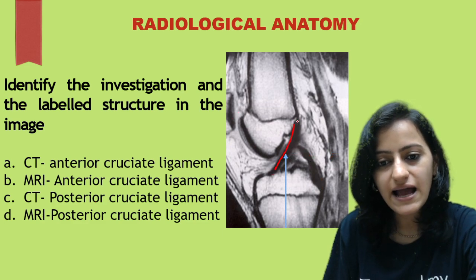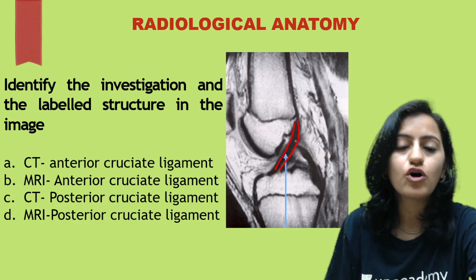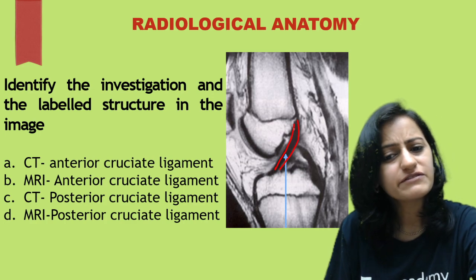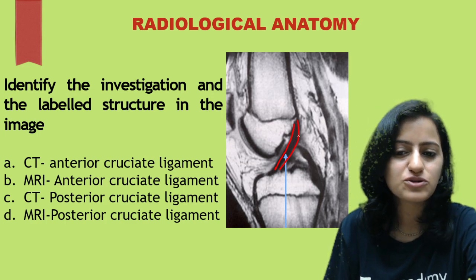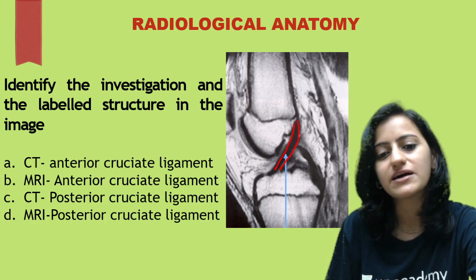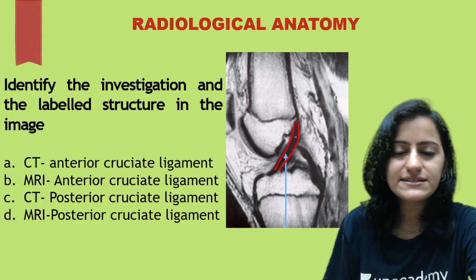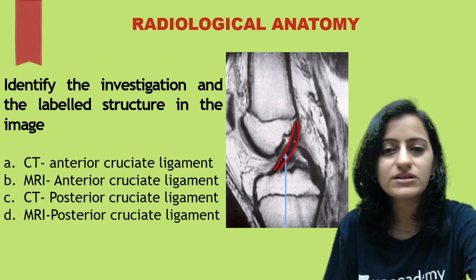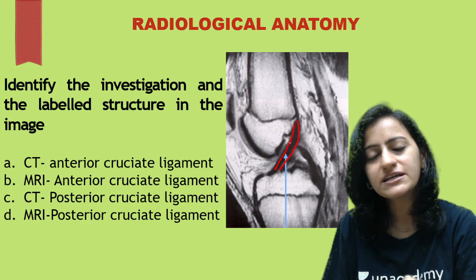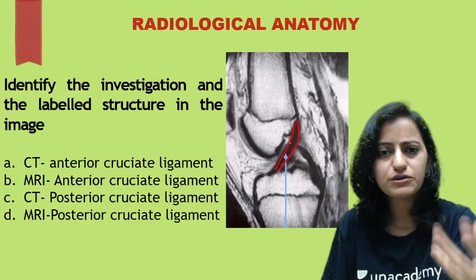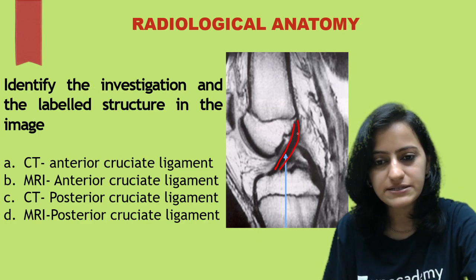This is the anterior cruciate ligament — a normal one — which is black, dark, and hypointense. A normal ligament is hypointense. When there is degeneration or a tear, we see hyperintensity due to fluid coming in, which gives that hyperintense signal.